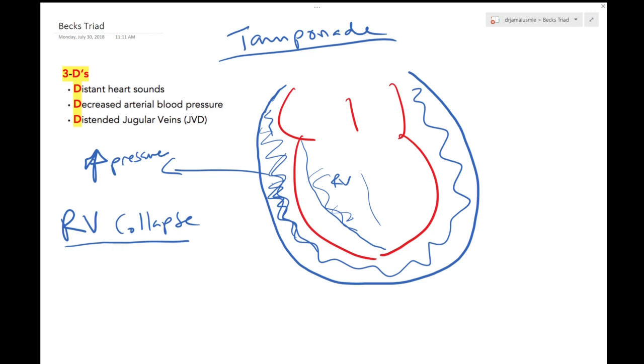Less preload means less going into the LA, less going into the LV, and less blood going to the systemic vasculature. This will mean that the stroke volume has gone down and there will be less cardiac output.